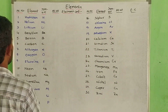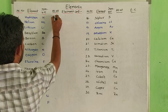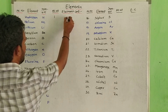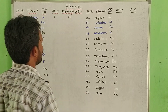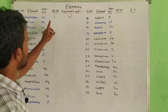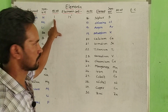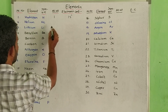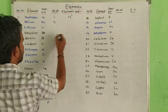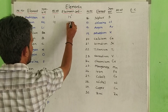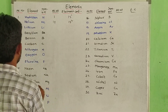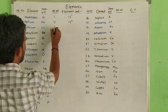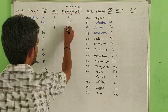First one: hydrogen, atomic weight 1, electronic configuration 1s1. Next: helium, atomic weight 2, electronic configuration 1s2.